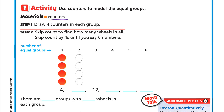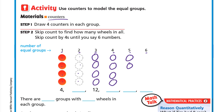Step one: draw four counters in each group. We have one, two, three, four, five, six groups — these are the six cars. Each car has four wheels, so in each group we draw four circles: one, two, three, four. We do this for all six groups, representing the four wheels on each car.